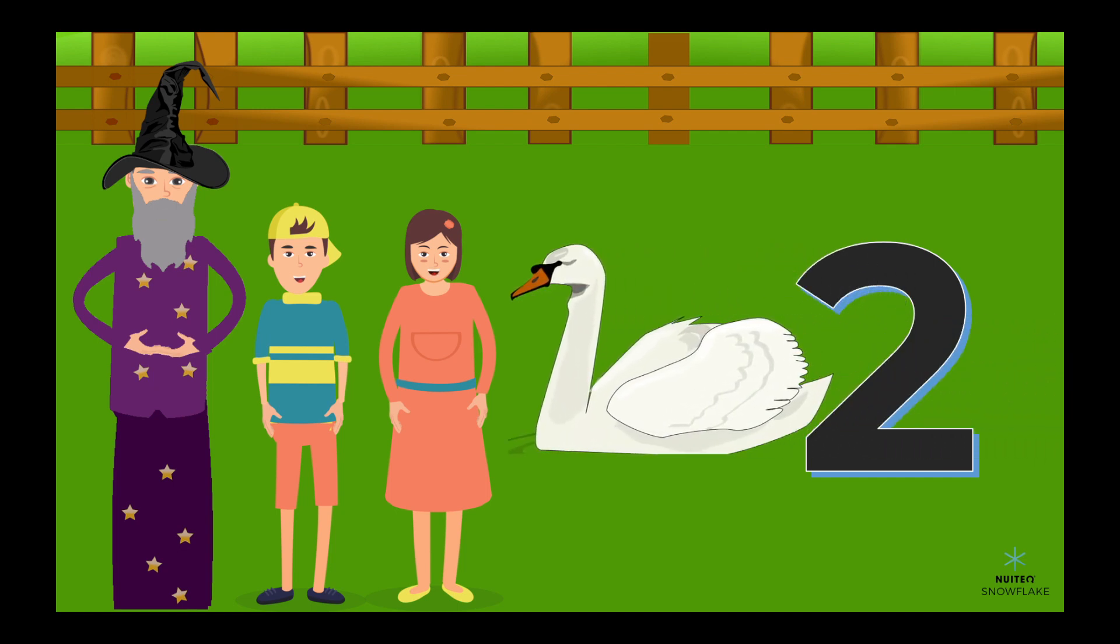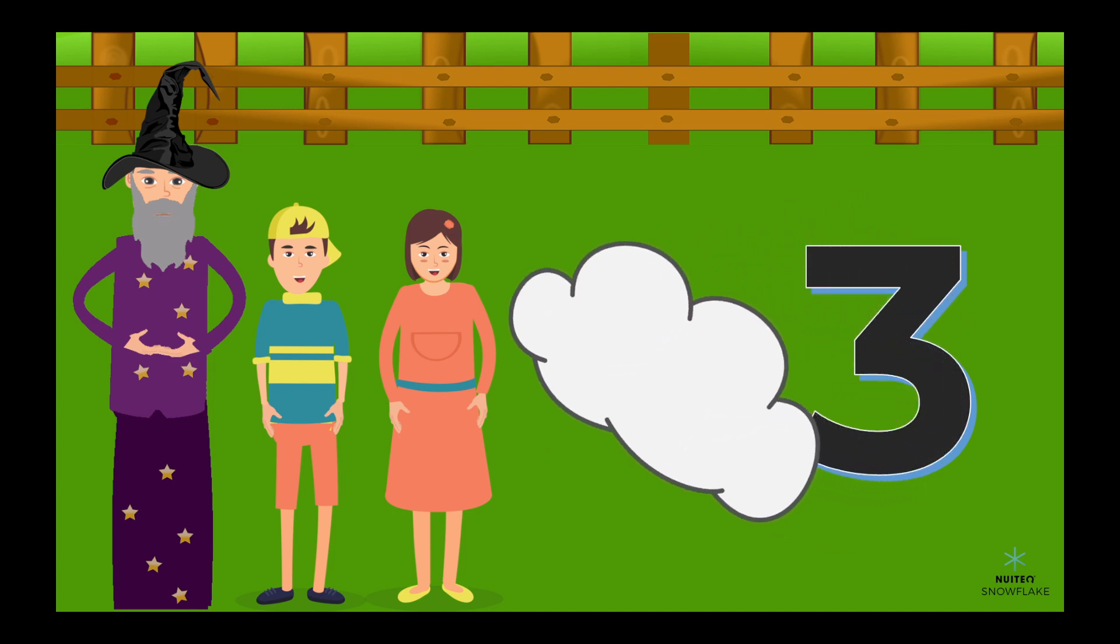Number 3 is a bit like a fluffy cloud. Create a curvy line sideways, just like a cloud floating in the sky. Let's make some clouds. Number 3 is so fluffy.